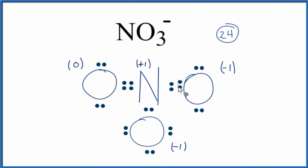If we move this pair here to form a double bond and reduce the formal charges, now nitrogen has ten valence electrons. So that doesn't work. That makes this the best Lewis structure for NO3 minus.